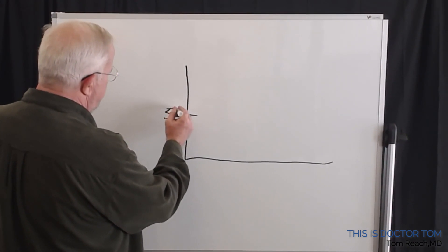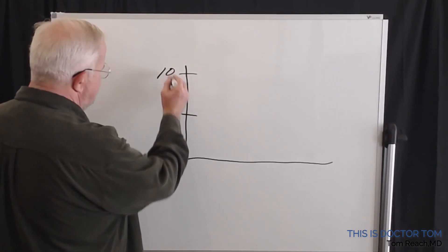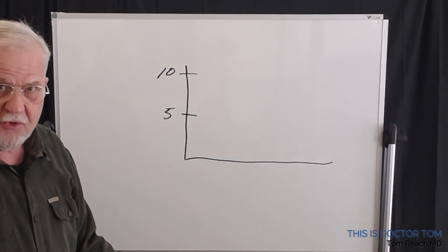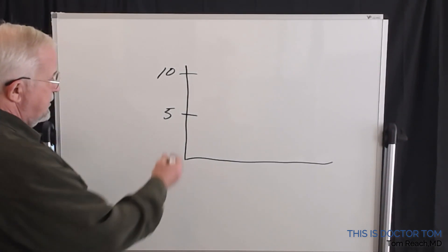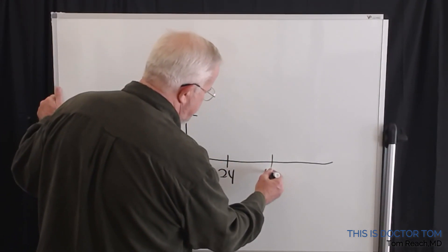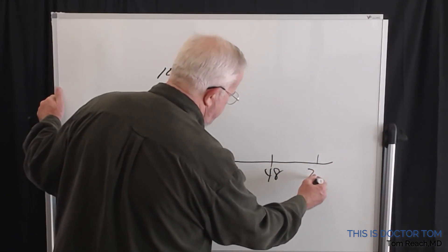Let's say that on the y-axis you have your blood level, your buprenorphine level, and this is 24 hours, this is 48 hours, this is 72 hours.